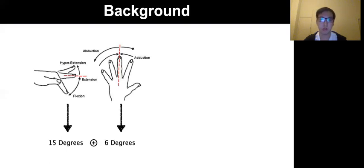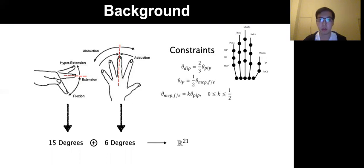In total, they form a 21-dimensional angle space. By applying constraints of the human hand like this, we're able to reduce the dimension to 16, which makes the problem simpler.